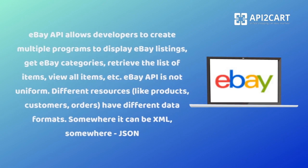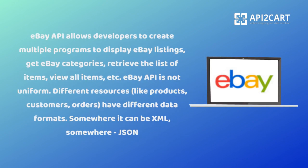eBay API allows developers to create multiple programs to display eBay listings, get eBay categories, retrieve the list of items, view all items, etc. eBay API is not uniform. Different resources have different data formats — somewhere it can be XML, somewhere JSON.